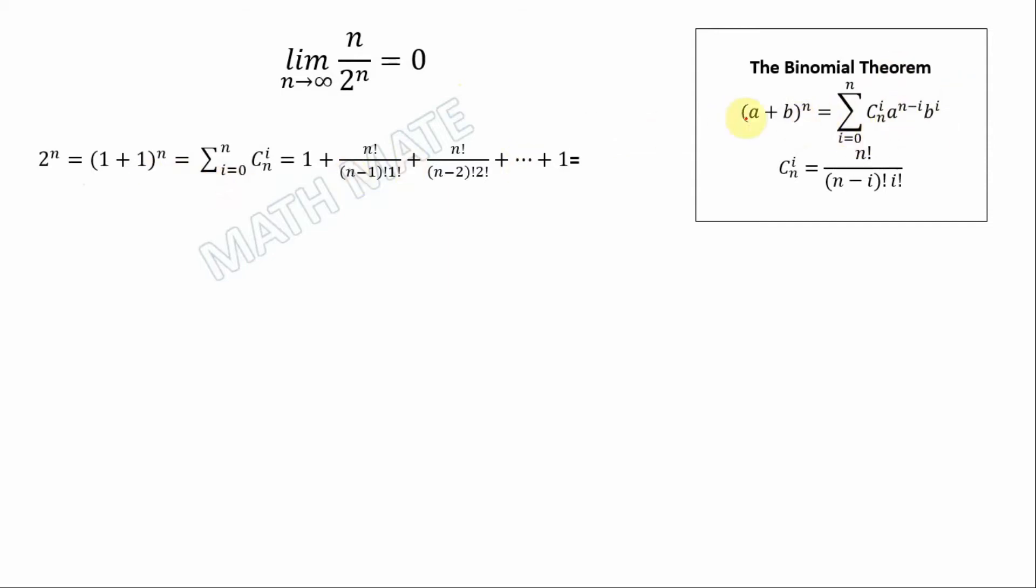So a and b are both 1, the power is also 1. As the first term, we have n factorial divided by n factorial, so it gives us 1.